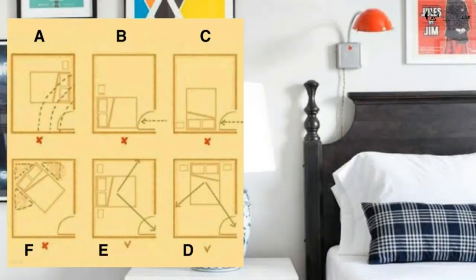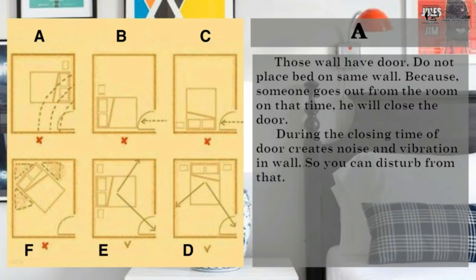So you can see 6 types of bed placement in this image. We will go through one by one. If wall has a door, do not place a bed on same wall, because when someone goes out from the room and closes the door, during the closing time the door creates noise and vibration in the wall, so you can get disturbed from that.